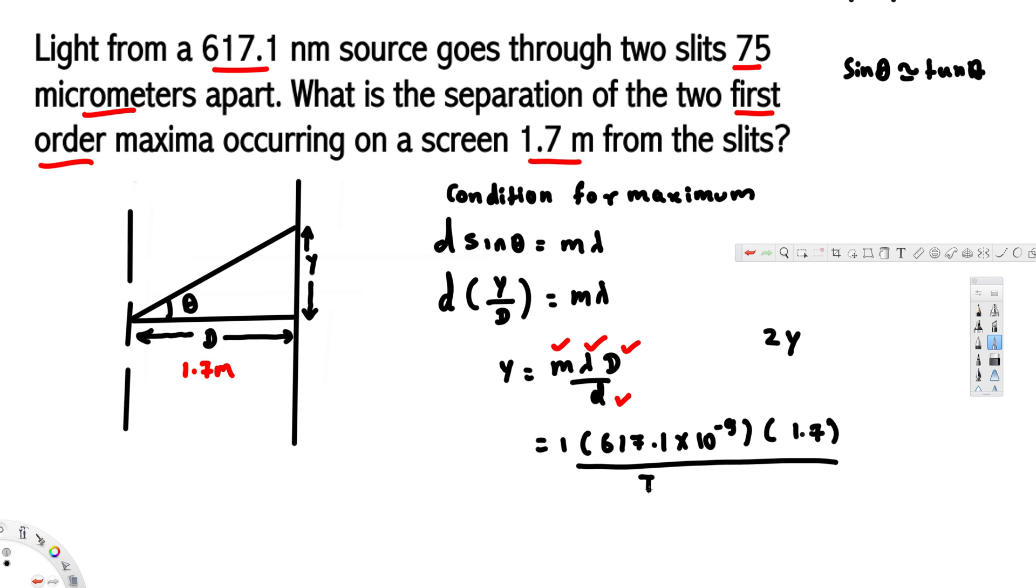Then the slit separation is 75 micrometers, which is 75 × 10⁻⁶. And that's it.